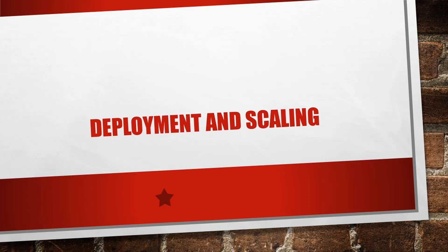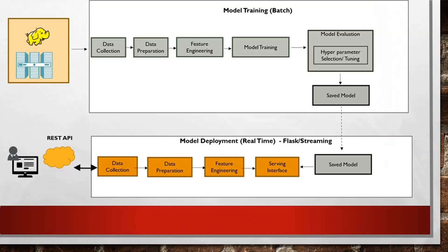The final benefit is deployment and scaling. If you look at an end-to-end pipeline, the training pipeline is a mechanism to collect data, preprocess data, feature engineer, and then train the model. Once the model is trained, you save the model, and then in your deployment pipeline, you replicate the entire workflow of data collection, data preprocessing, feature engineering, and load the saved model into a serving function. Then you do inference on it.